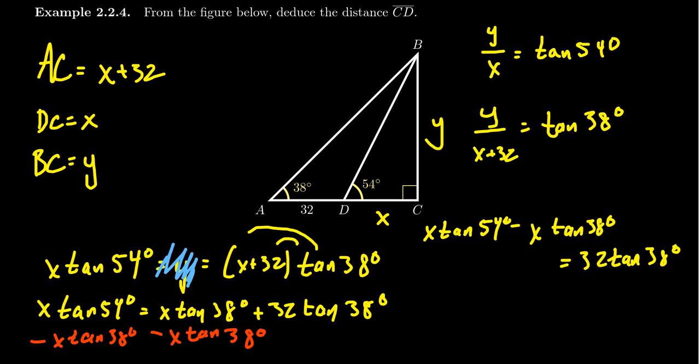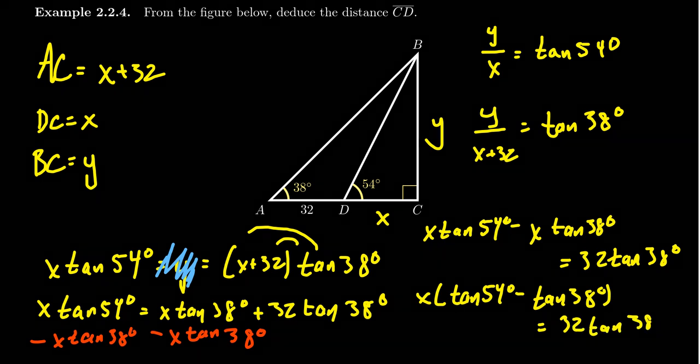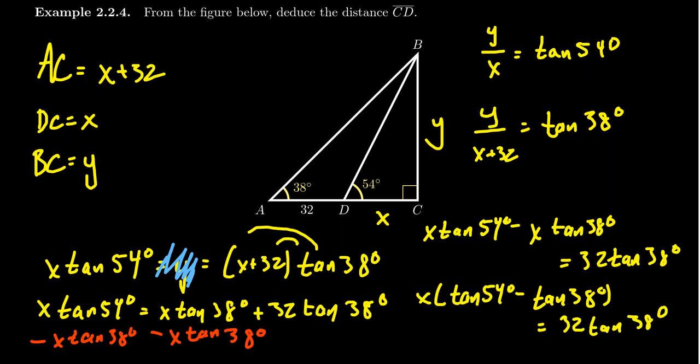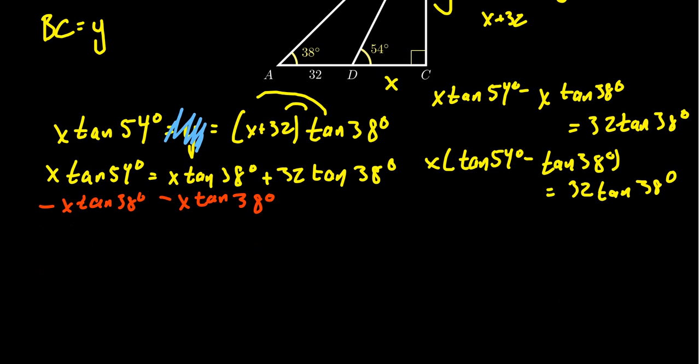Factor the left-hand side. That is, there's a common factor of X. So we're going to get tangent of 54 degrees minus tangent of 38 degrees. This is still equal to 32 times tangent of 38 degrees. And so then if we divide by the coefficient of X, which in this case is tangent of 45 degrees minus tangent of 38 degrees,